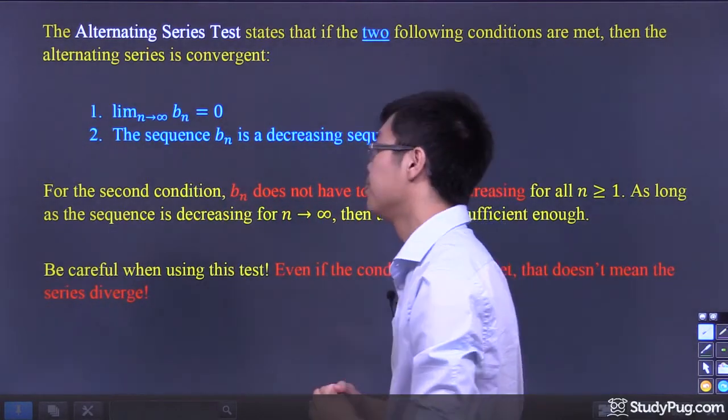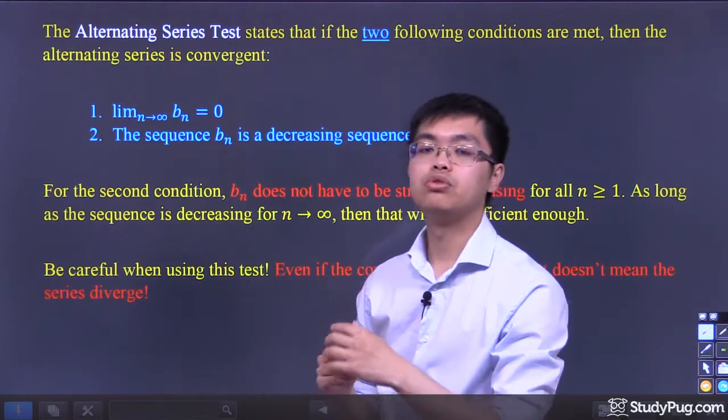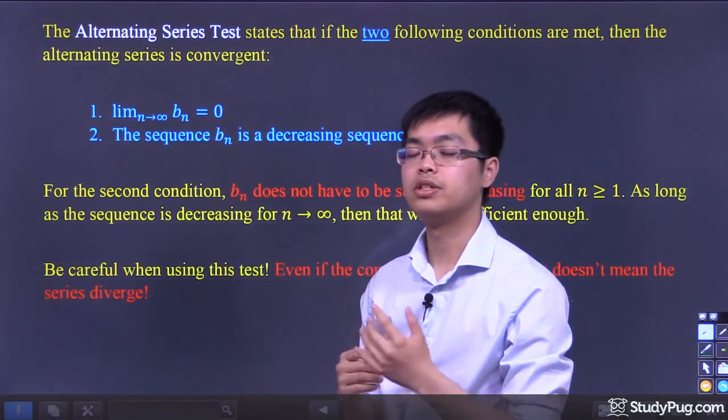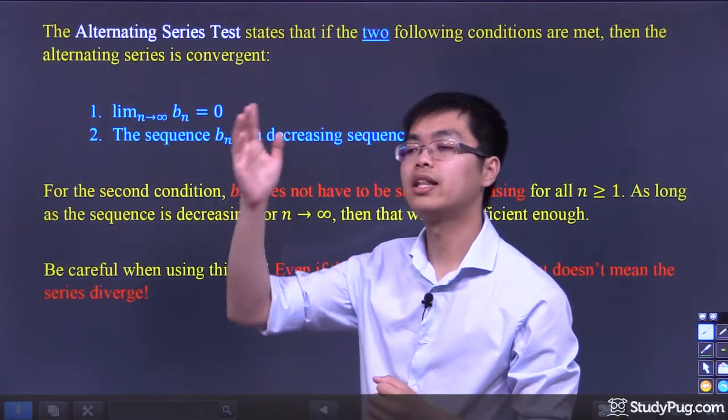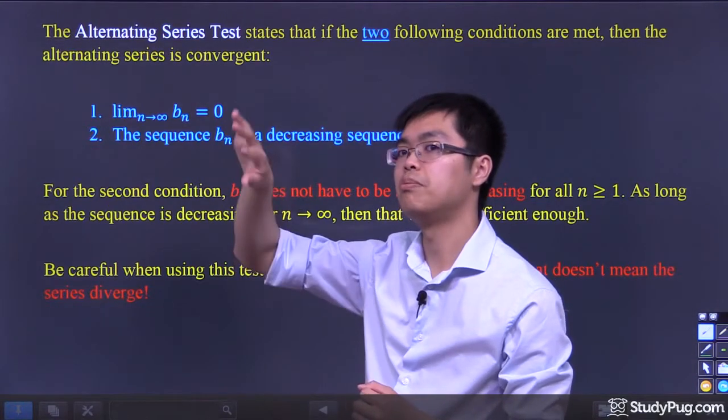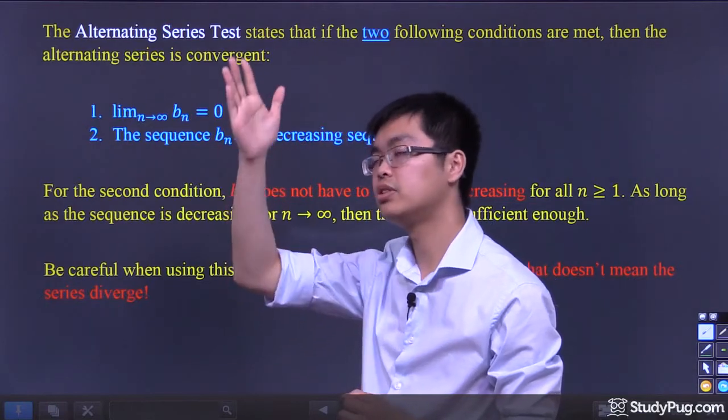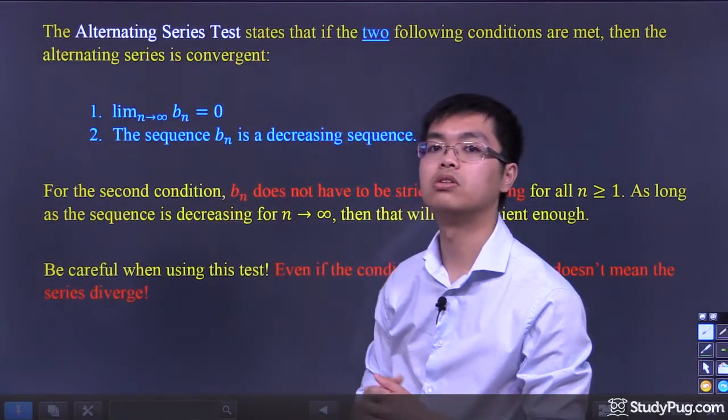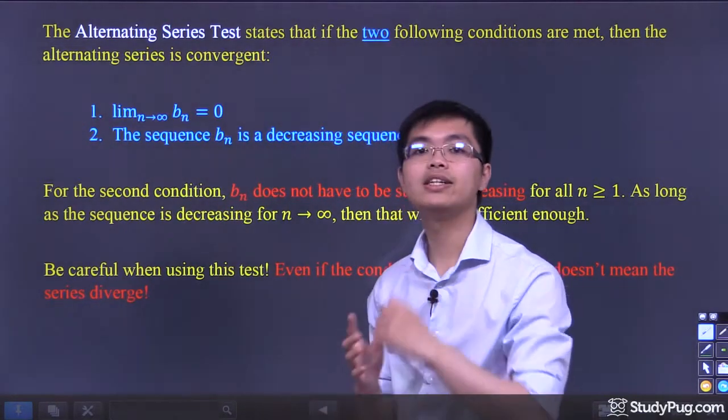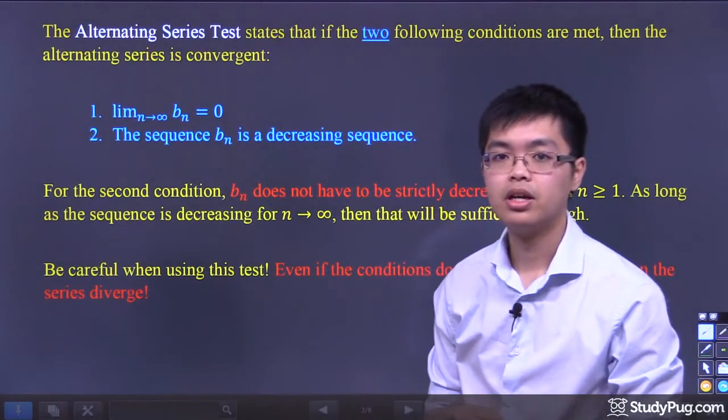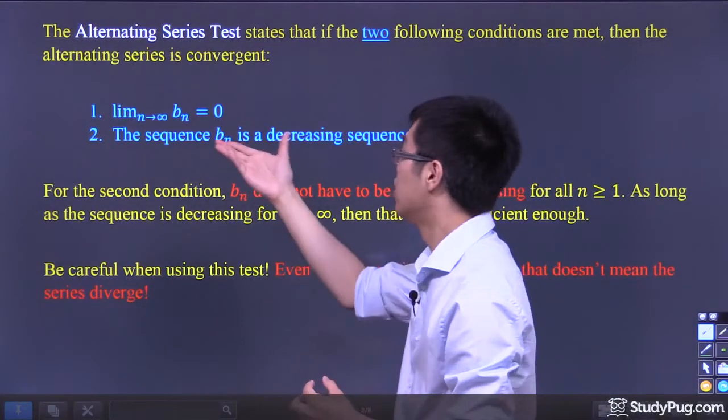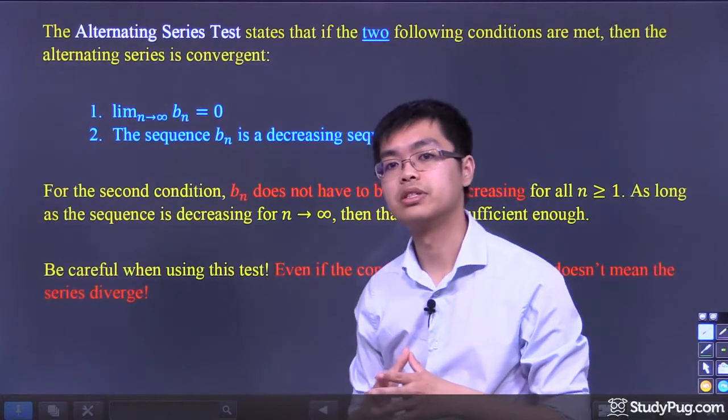So for example, let's say from n equals two to n equals ten, for this sequence, you can see that the numbers are getting bigger and bigger. But then from n equals ten to infinity, you see that the numbers just go smaller and smaller. Now that is acceptable, actually.